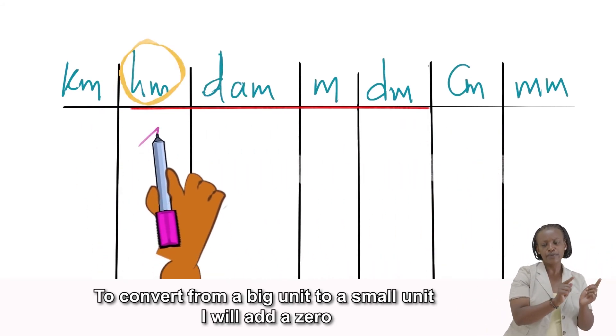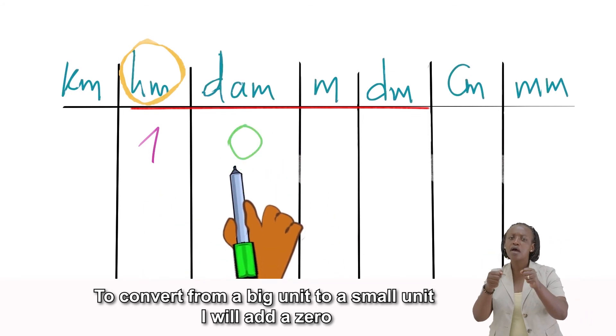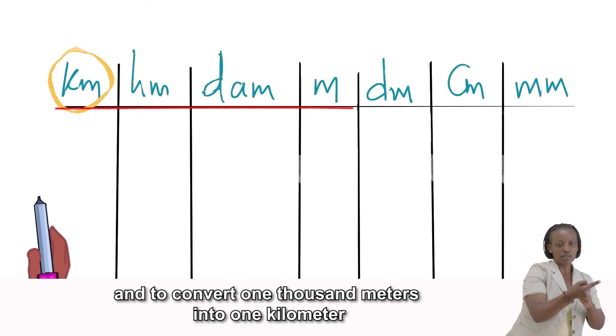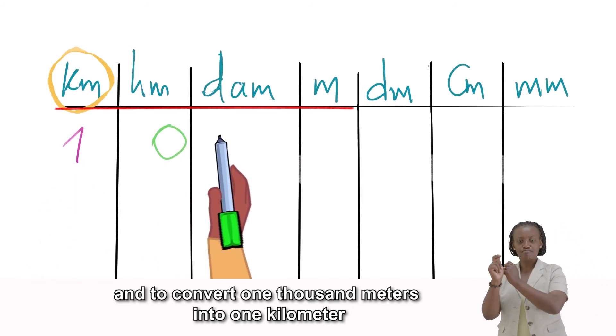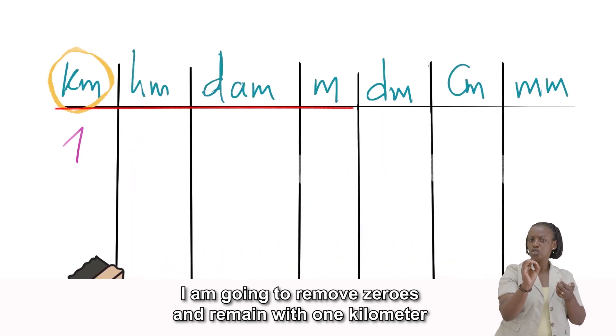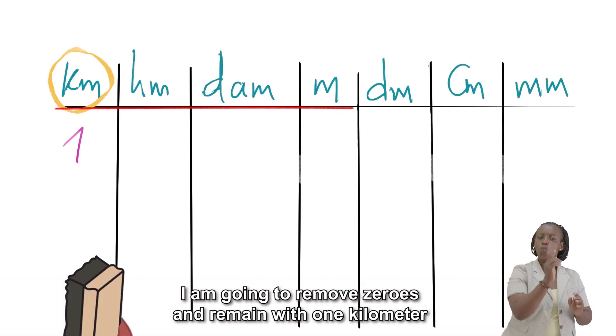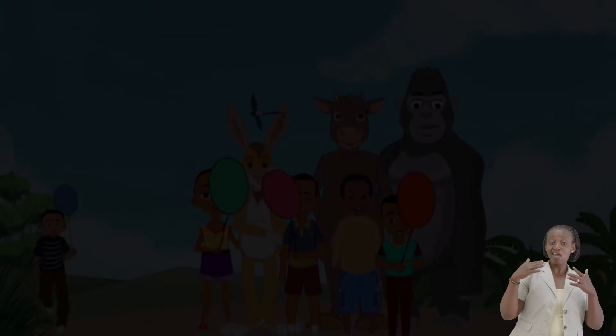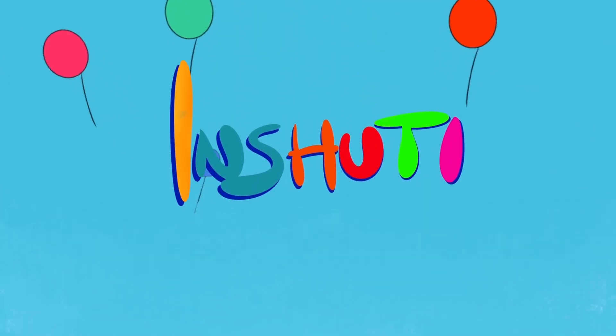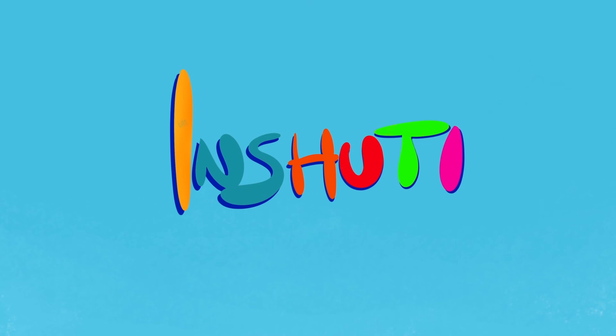to a small unit, I will add a zero. And to convert 1,000 meters into 1 kilometer, I am going to remove zeros and remain with 1 kilometer. We are happy every time. I am my friend.